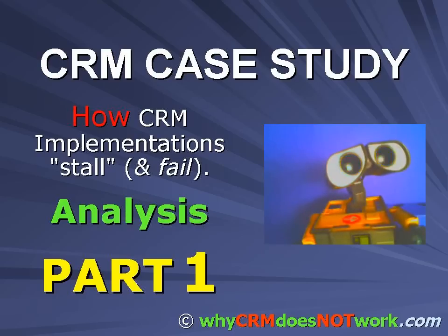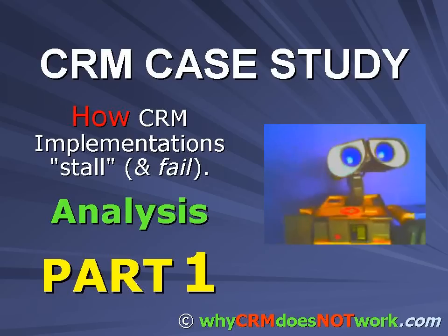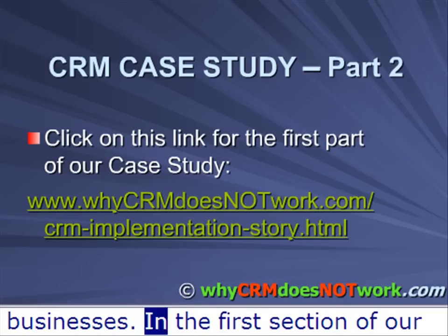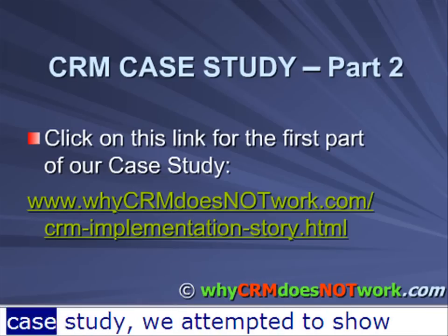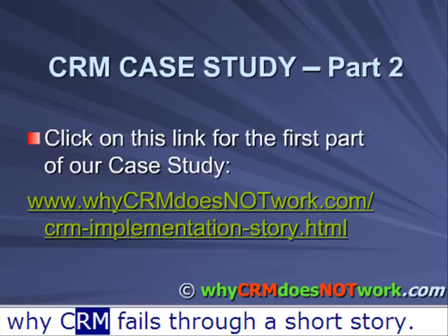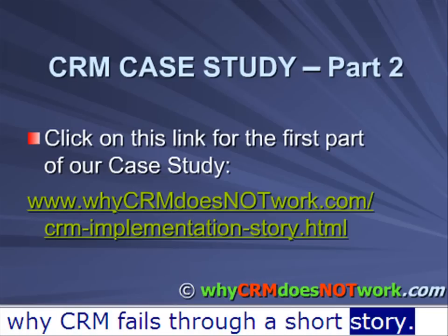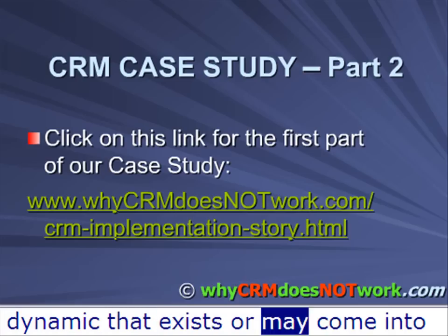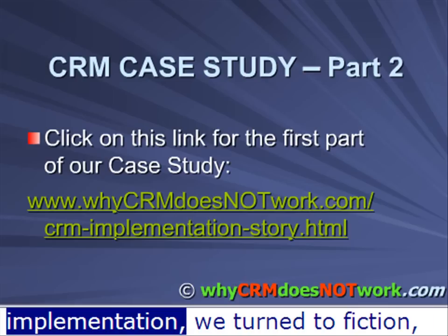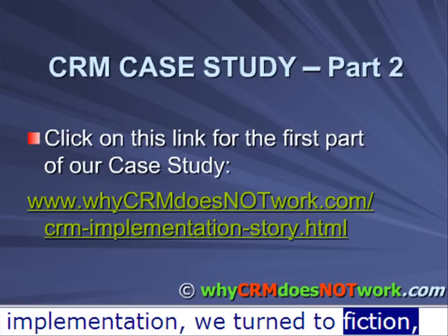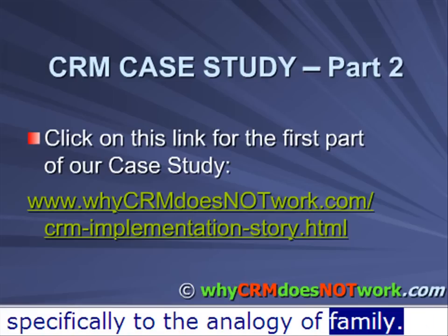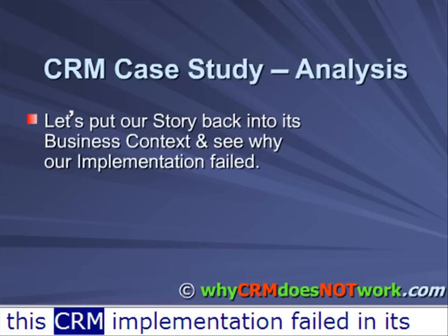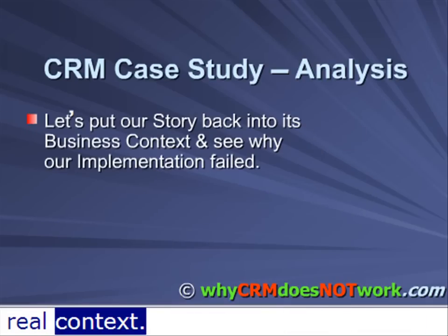This presentation is the second part of our two-part case study about the reasons why CRM fails in mid-size businesses. In the first section of our case study we attempted to show why CRM fails through a short story. In order to highlight the human dynamic that exists during and after a CRM implementation, we turned to fiction — specifically to the analogy of family. We will now explore the reasons why the CRM implementation failed in its real context.